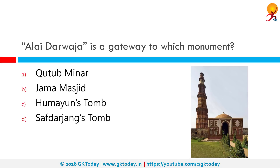Alai Darwaza is a gateway to which monument? The Mamluk dynasty did not employ true Islamic architecture styles and used false domes and false arches. The first example of a true arch and true dome is the Alai Darwaza, which is located at the entrance of the Qutub complex. So the correct answer is Qutub Minar. It was built by Alauddin Khilji in 1311 AD.